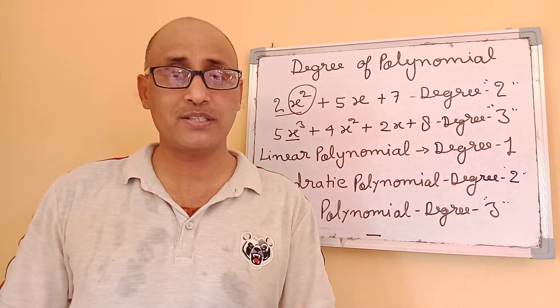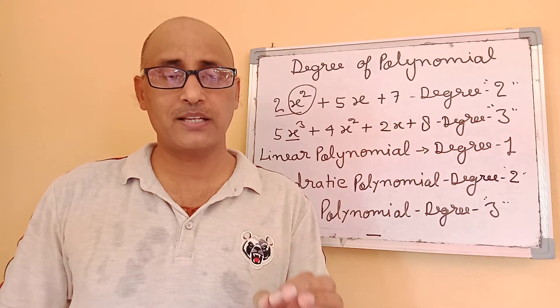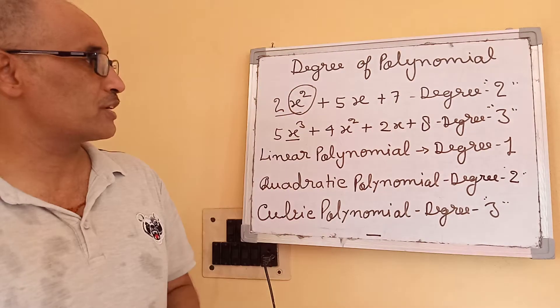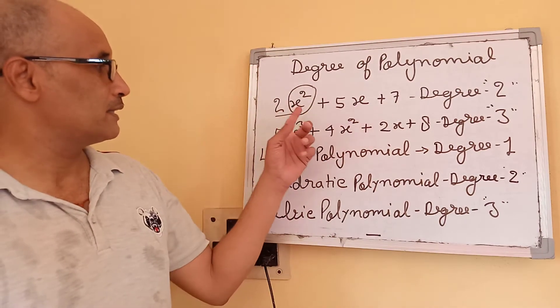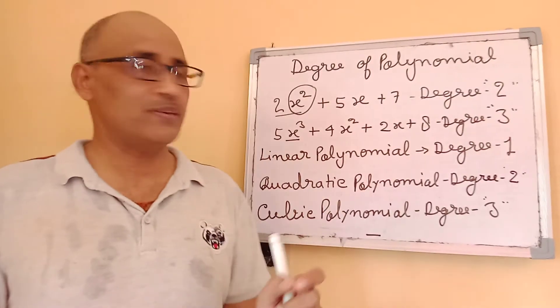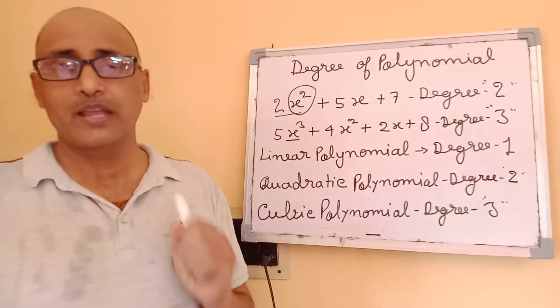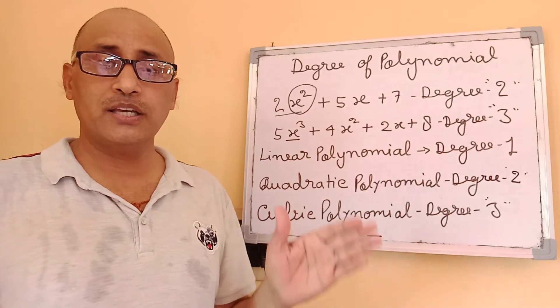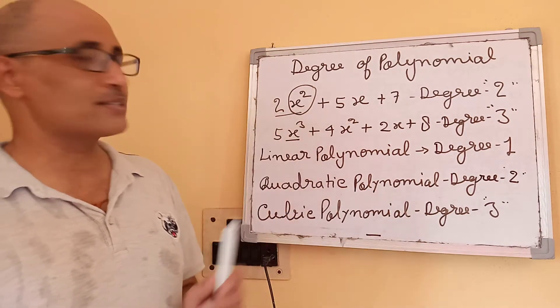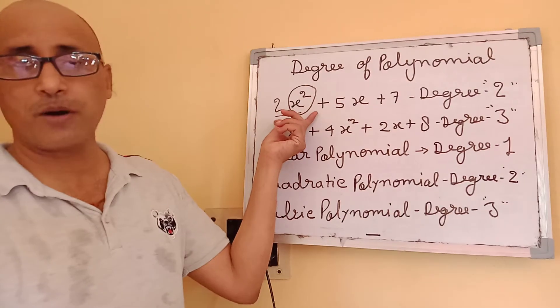I am going to demonstrate this by giving some examples. If you look at this equation, you will find that this first equation has only one variable, that is x. And if you see the highest power, you will find that x squared has the highest power.